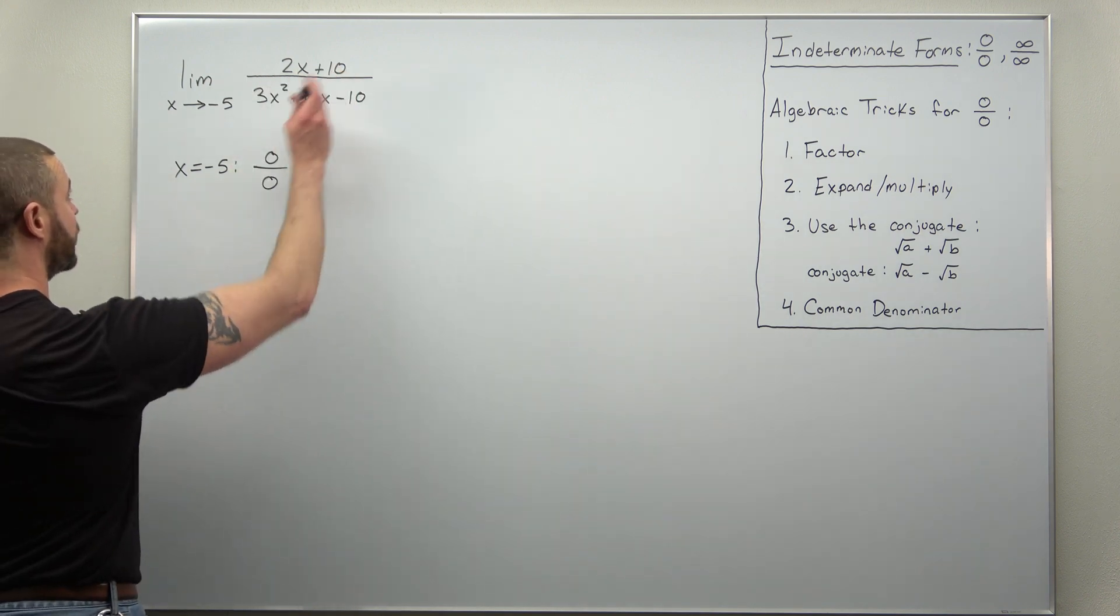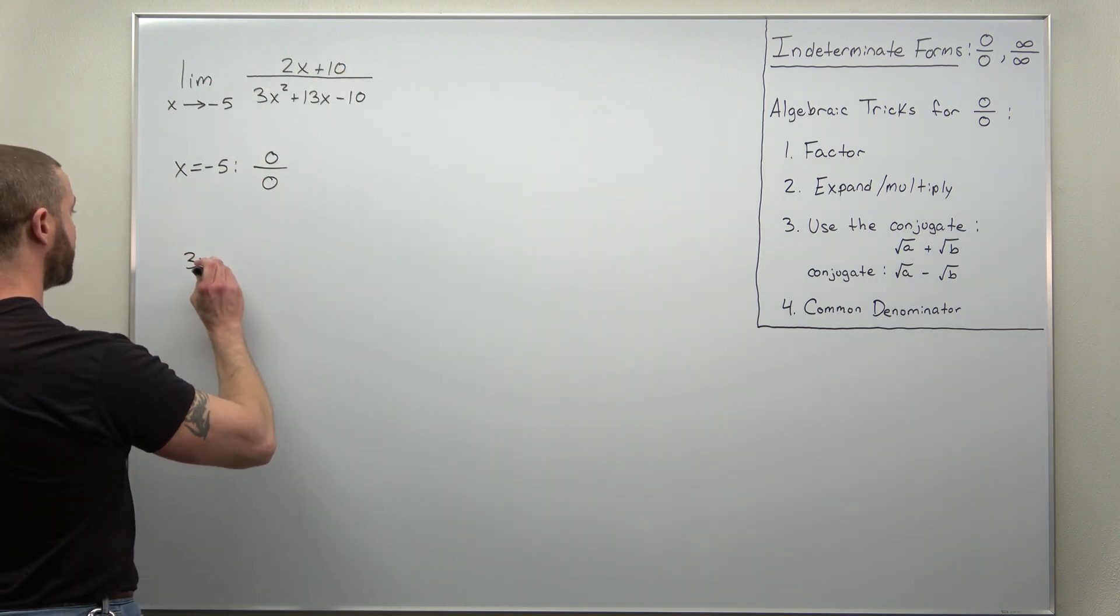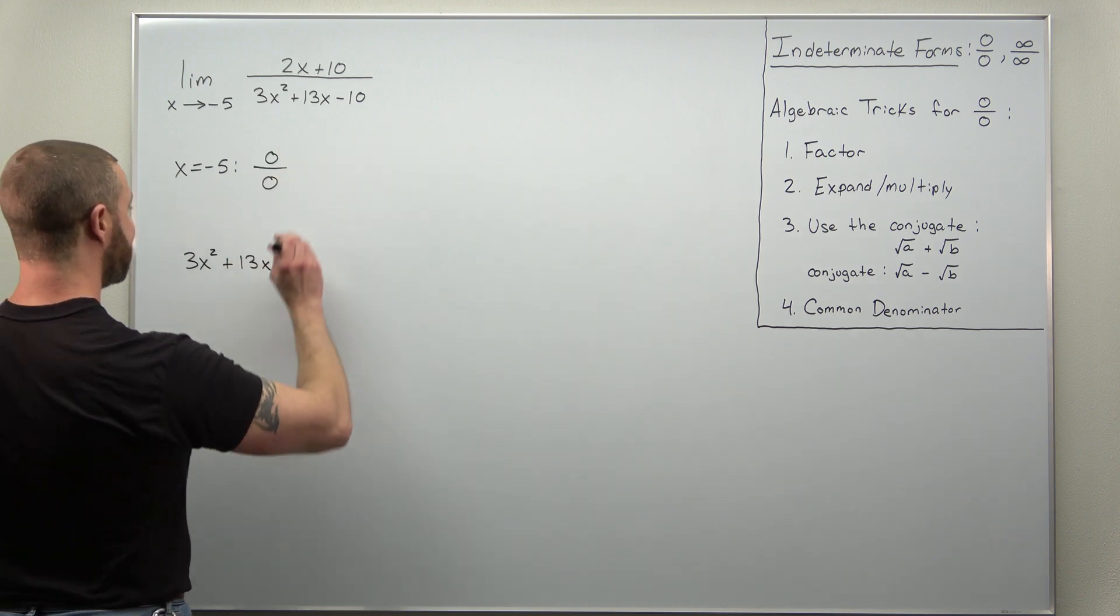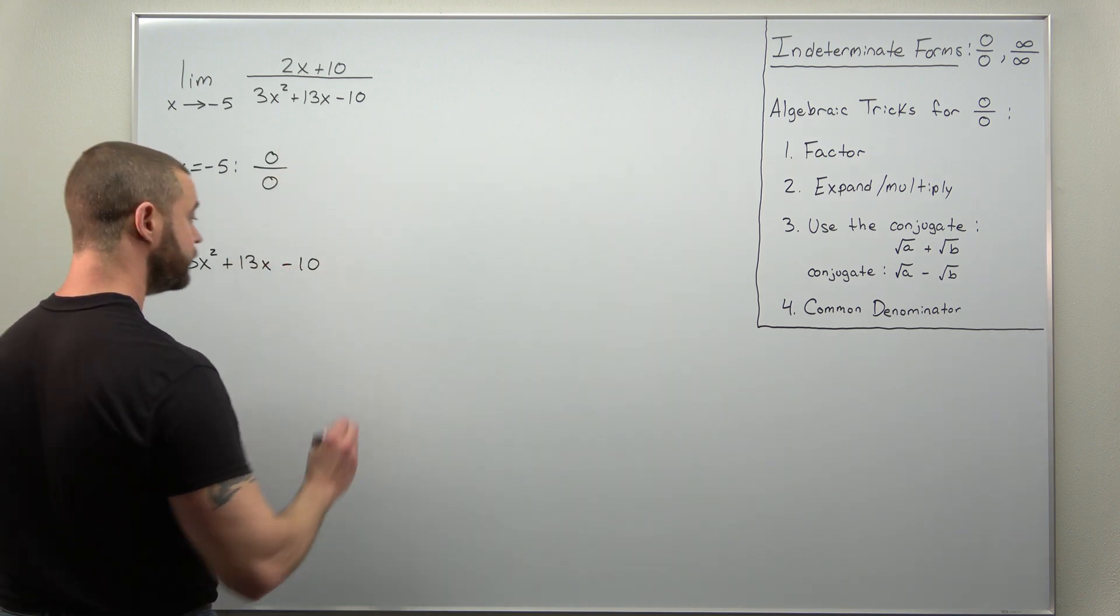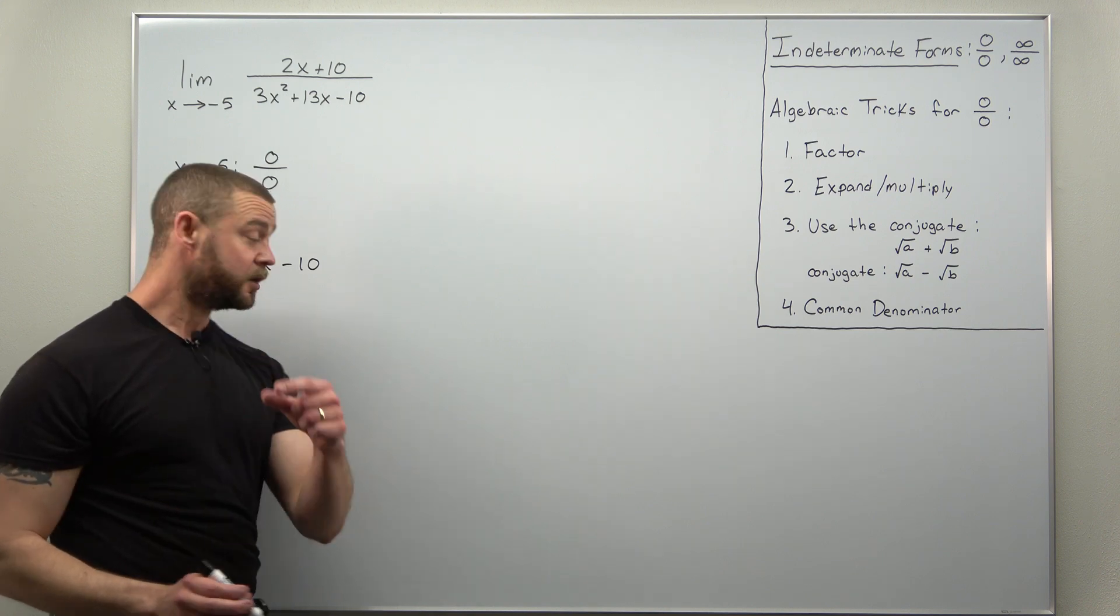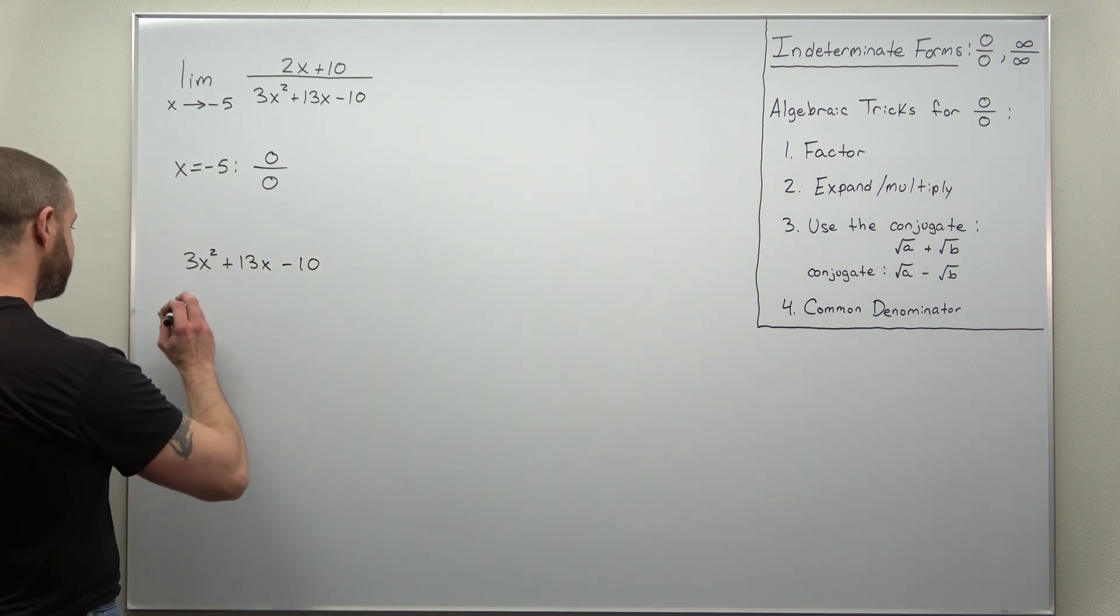So let's start that. We're going to factor 3x squared plus 13x minus 10. And the method I like to use is called the AC method. We're going to first identify the values of A, B, and C.